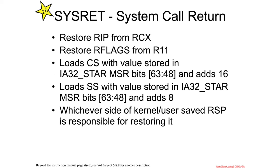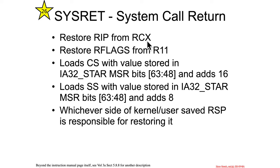Now that's paired with sysret — system call return. What does that do? It has to do the inverse of the syscall. So the RIP is going to be restored from RCX. The kernel side needs to make sure that if it used RCX for anything in kernel space, it puts it back to the RIP after the syscall so it can return there. The RFlags is going to be restored from R11, so all that bit masking doesn't matter because the original value was stored to R11.